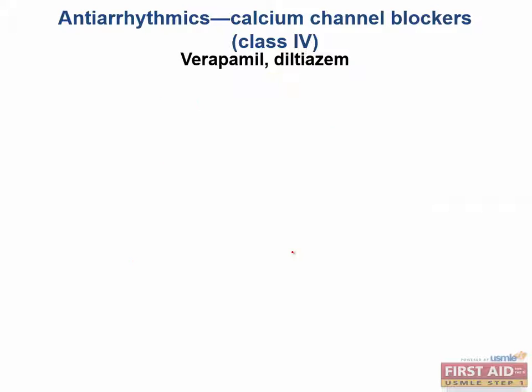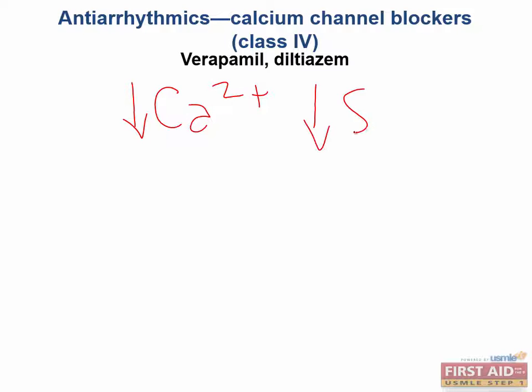Now we need to discuss the side effects. If we decrease calcium conductance in the pacemaker cells excessively, we could end up causing sinus node depression, AV block, and even acute heart failure if we really depress the heart to the point that it's unable to contract efficiently.